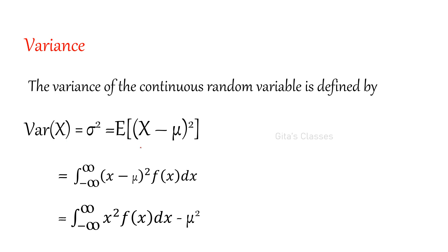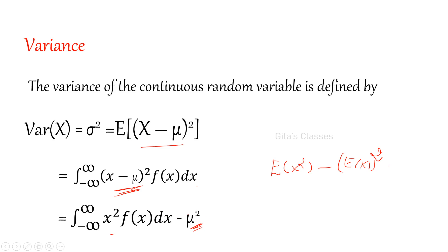Variance is defined as E of x minus mu, the whole square. So, variance equals the integral from minus infinity to plus infinity of (x minus mu) squared times f of x dx. This can be expanded as E of x squared minus E of x the whole square, that is, the integral from minus infinity to plus infinity of x squared times f of x dx minus mu squared. All these formulas you have to remember. We can do some problems in the next live class so you will understand all these formulas easily. Thank you so much for listening.